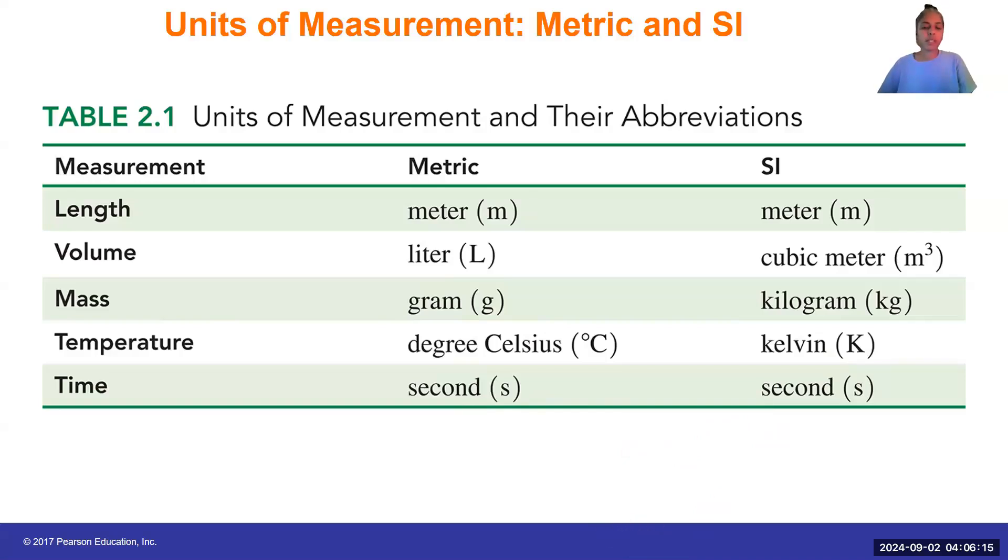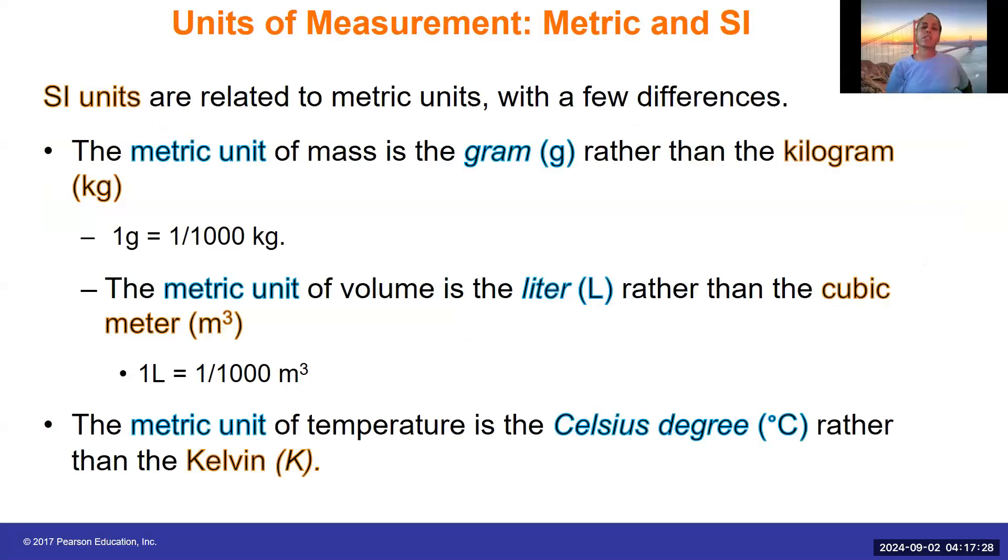SI and metric units are related. There are three major differences. The metric unit of mass is the gram rather than the kilogram in the SI system. The metric unit of volume is the liter rather than the cubic meter in the SI system. And the metric unit of temperature is the Celsius degree rather than Kelvin. Notice that the difference between the kilogram and the gram is that a gram is one one-thousandth of a kilogram. And the difference between a liter and a cubic meter is that a liter is one one-thousandth of a cubic meter.